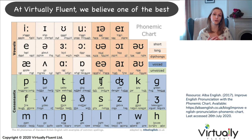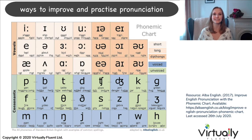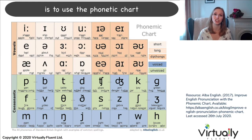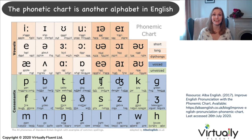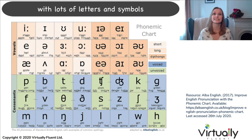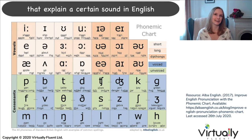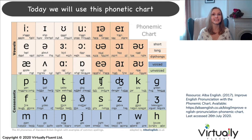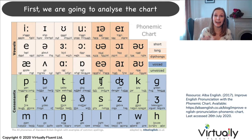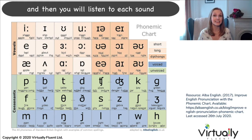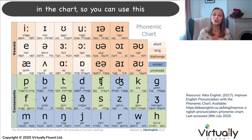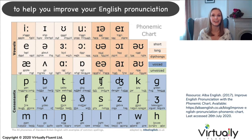At VirtuallyFluent we believe one of the best ways to improve and practice pronunciation is to use the phonetic chart. The phonetic chart is another alphabet in English with lots of letters and symbols that explain a certain sound in English. Today we will use this phonetic chart. First we are going to analyze the chart so you understand it, and then you will listen to each sound in the chart so you can use this to help you improve your English pronunciation.